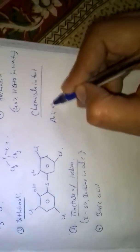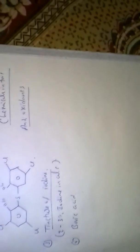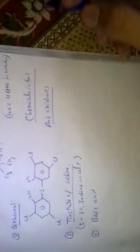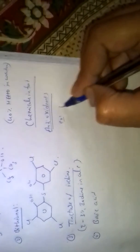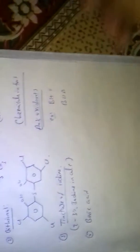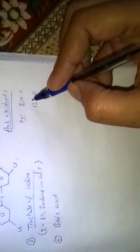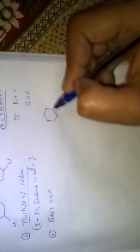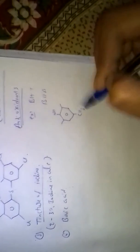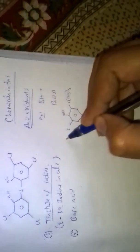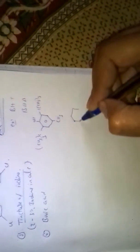Chemicals in food — first, antioxidants. These are substances which retard the action of oxygen on food. Examples include BHT (butylated hydroxytoluene) and BHA (butylated hydroxyanisole), whose structures are shown.